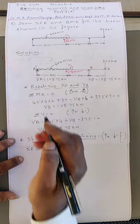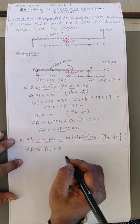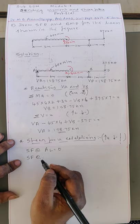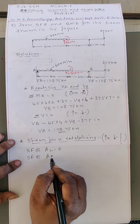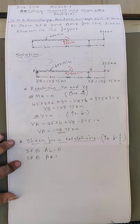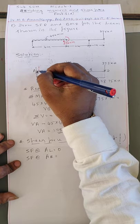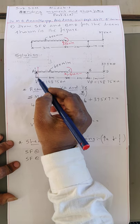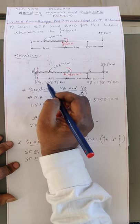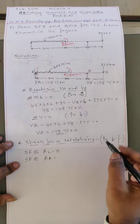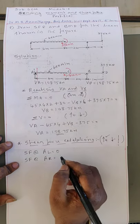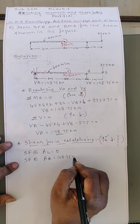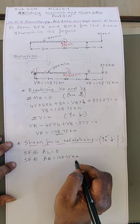Shear force at A left: to the left of A there is no beam, so shear force is 0. Shear force at A right: section line is just right of A. Considering the left portion, there is one upward force VA = 108.75 kilonewton. Therefore shear force at A right = +108.75 kilonewton.